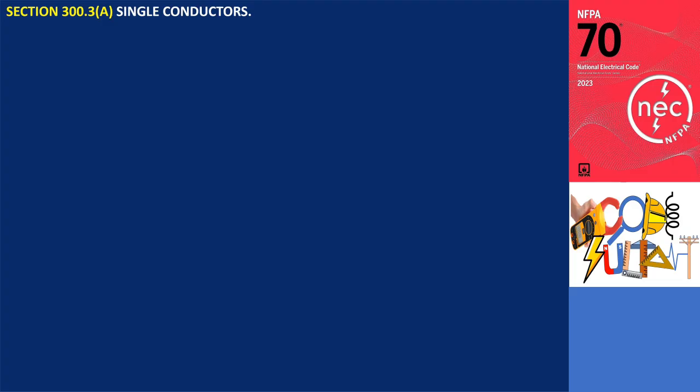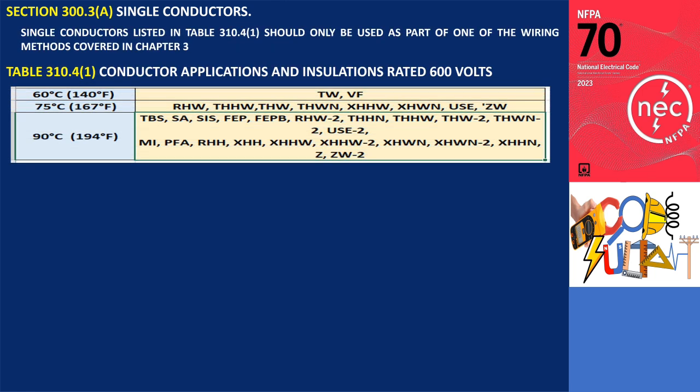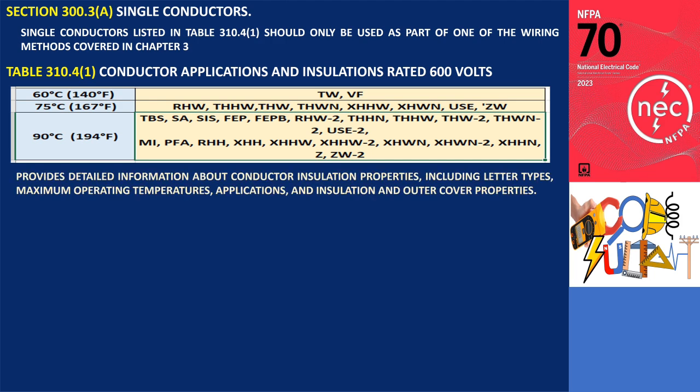Section 300.3a specifies that the single conductors listed in Table 310.4.1 should only be used as part of one of the wiring methods covered in Chapter 3. Table 310.4.1 provides detailed information about conductor insulation properties, including letter types, maximum operating temperatures, applications, and insulation and outer cover properties.